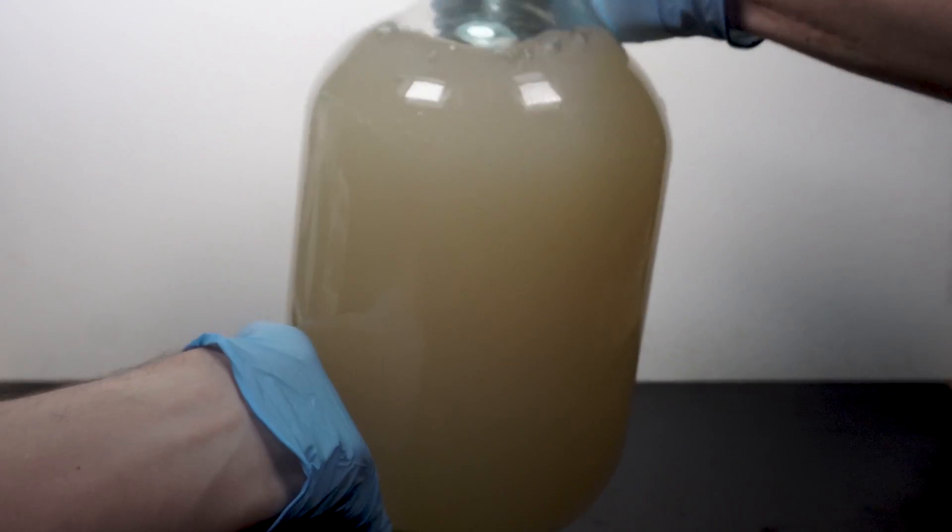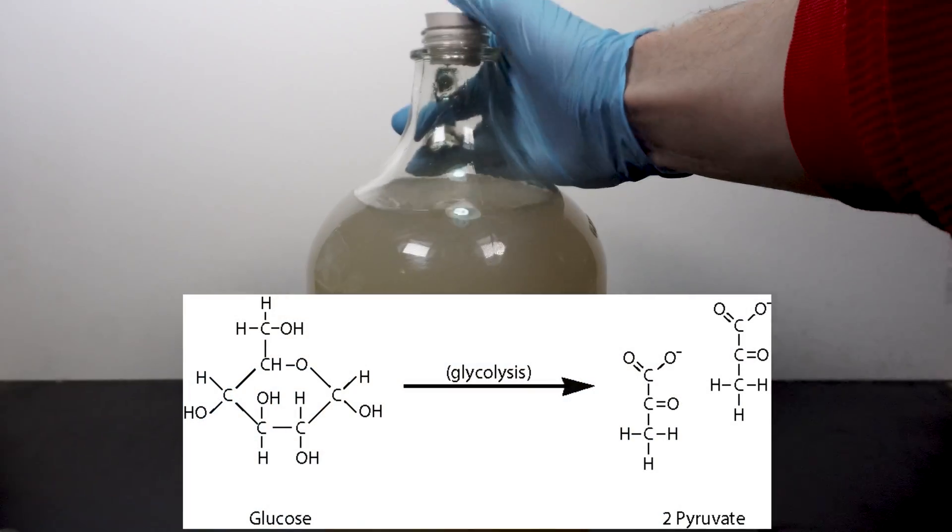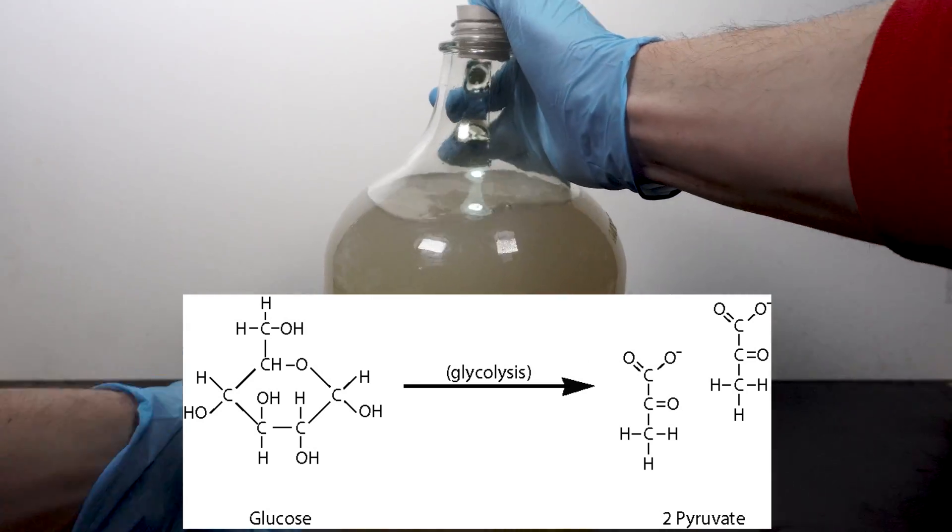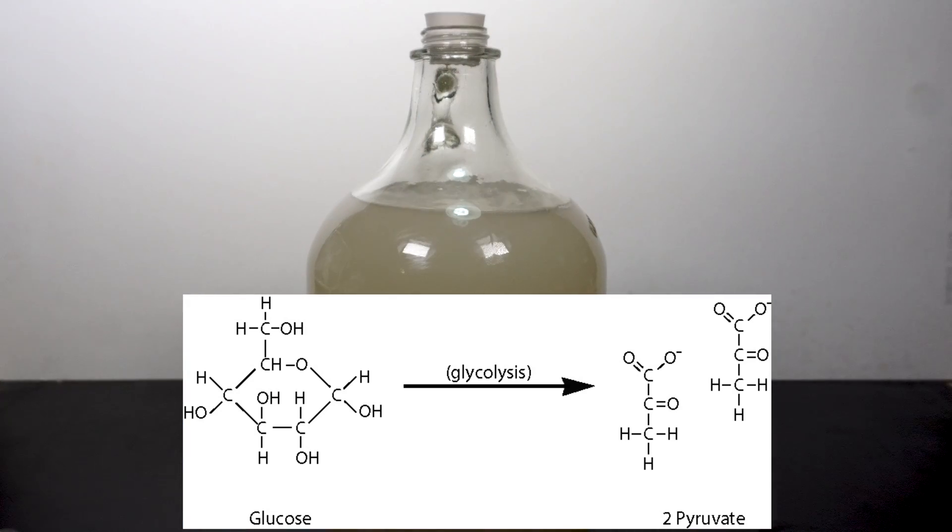Fermentation begins with the breakdown of sugars by yeast to form pyruvic acid molecules, which is also known as glycolysis. Glycolysis of glucose molecules then produces two molecules of pyruvic acid. The two molecules of pyruvic acid are then reduced to two molecules of ethanol and two CO2 molecules.